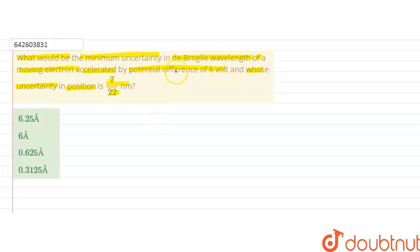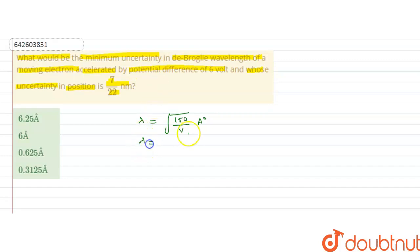So first of all, the de Broglie wavelength is related to the potential difference by the formula: lambda equals under root of 150 upon V, where V is the potential difference, giving the result in angstroms. Here the potential difference is given as 6 volts, so lambda equals under root of 150 by 6, which gives us lambda as 5 angstroms.